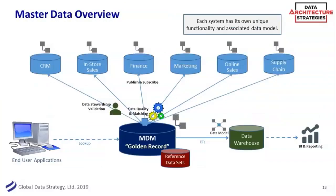This is a very high-level architecture of master data 101. There are a lot of ways to implement master data — hub-and-spoke, a federated model — but this classic centralized view is often a helpful way to get that single view, or what we call the golden record. Part of the issue is that you probably have customer data in a lot of different systems.